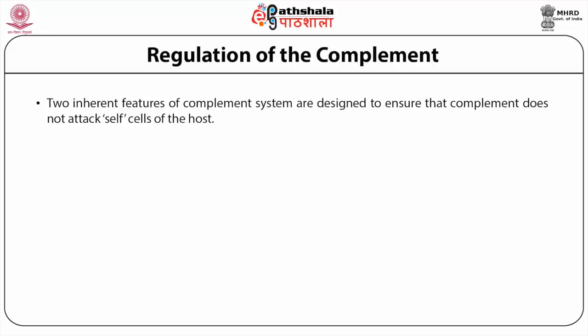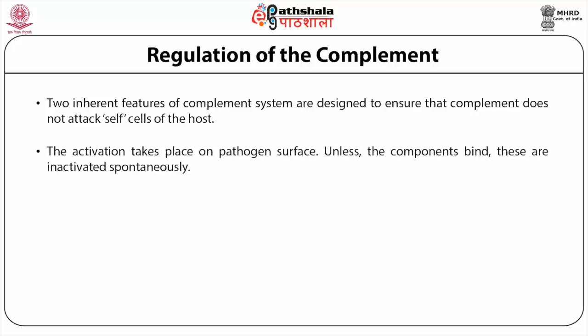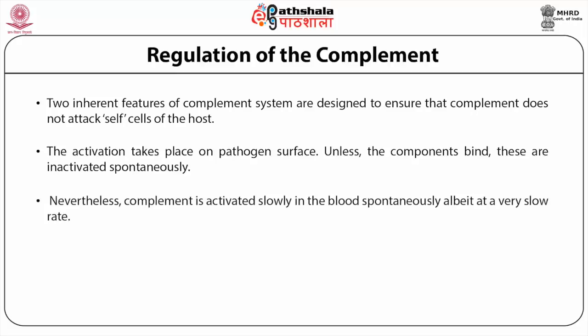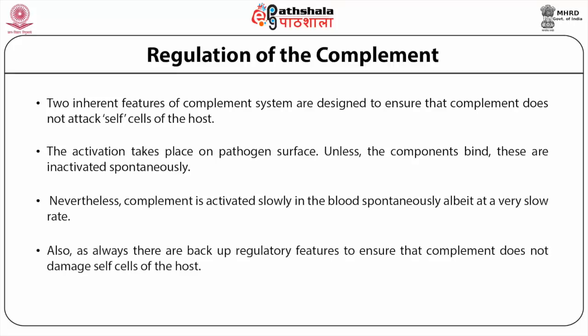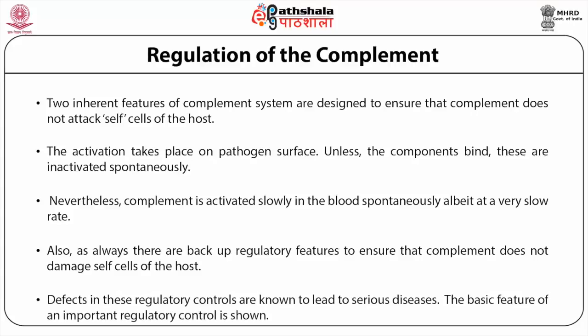Two inherent features of the complement system are designed to ensure complement does not attack host cells. All complement components occur as inactive molecules and activation takes place on pathogen surfaces; unless the components bind, these are inactivated spontaneously. Nevertheless, complement is activated slowly in the blood spontaneously, and there are backup regulatory features to ensure complement does not damage host cells. Regulatory controls primarily operate either at the beginning or towards the end of the activation pathways. All three pathways are regulated, and defects in these regulatory controls are known to lead to serious diseases.